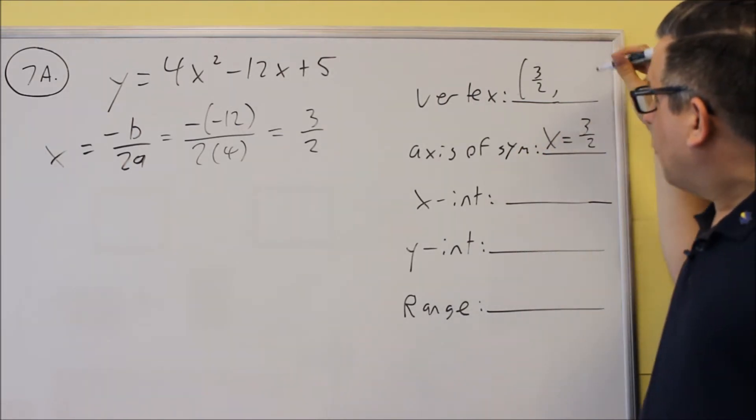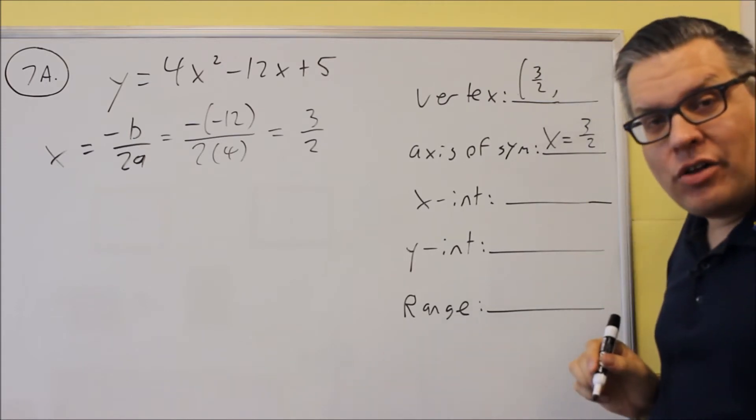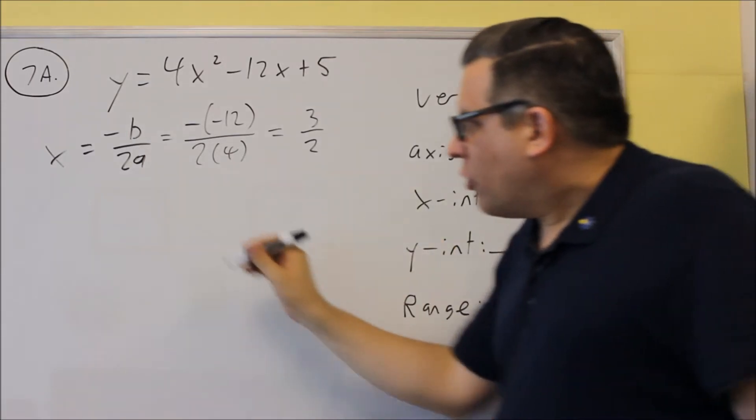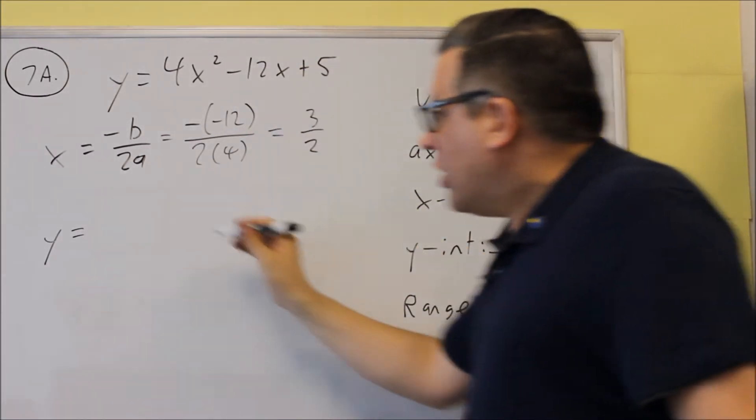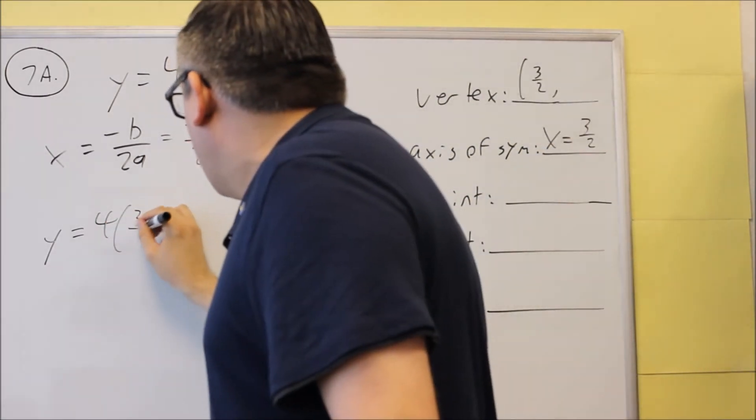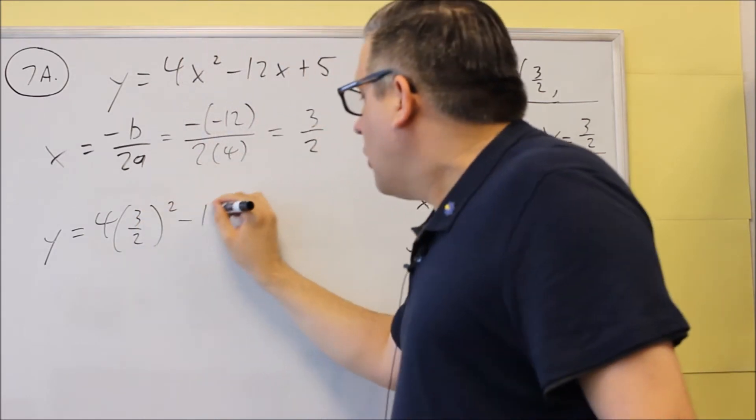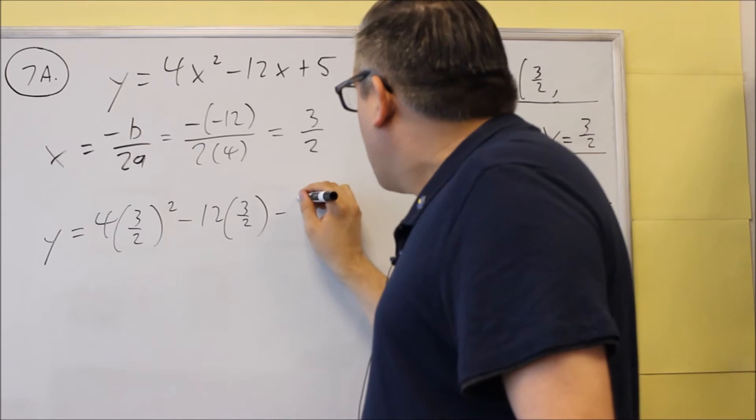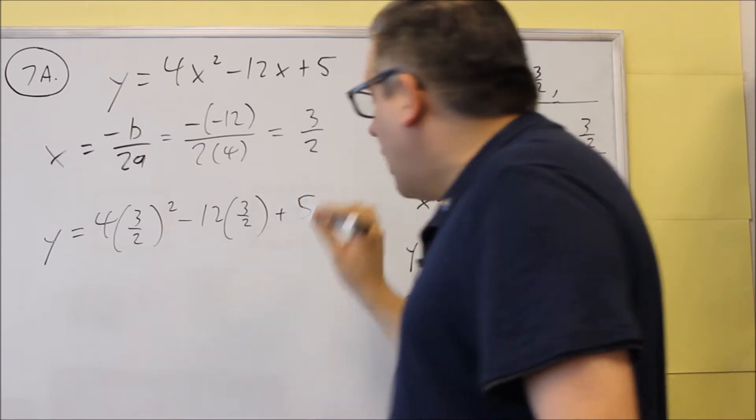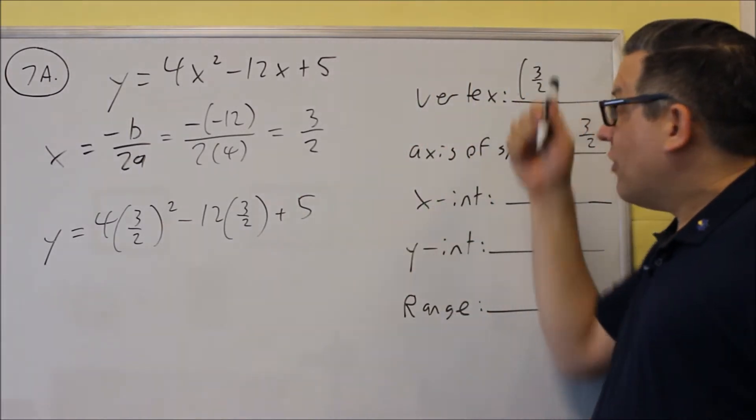So we've answered those. We still have to find the y value of the vertex. So what we do next is we're going to put 3 halves in for x in our original equation. So we're going to do 4, we'll put 3 halves in for each of the x's. And then we have, when we simplify that, that will give us the y value of the vertex.